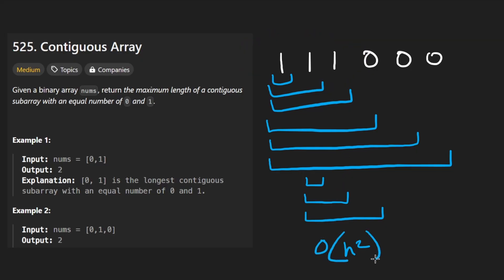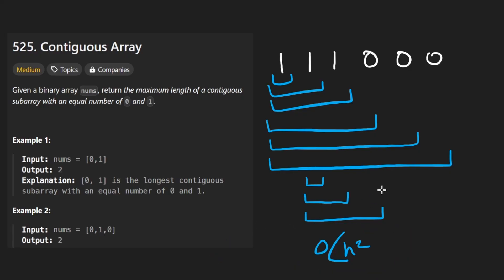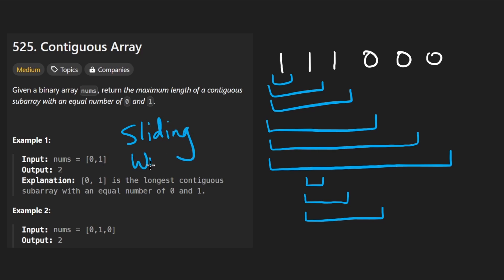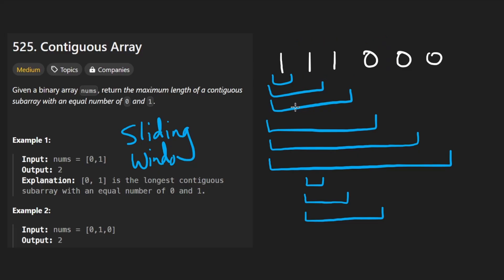Any solution we get should be better than an n² solution if we can find one. With this type of problem, what I immediately try to do to optimize it is try something like a sliding window. Is there a pattern here where we can intelligently shift our window? And in this case, actually, there's not. Let me tell you why.